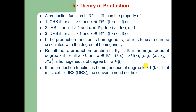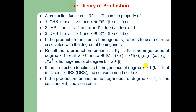If the production function is homogeneous of degree k greater than 1, there will be increasing returns to scale. And if the degree of homogeneity k is less than 1, there will be decreasing returns to scale. But the opposite may not always be true. If the production function is homogeneous of degree 1, there will be constant returns to scale and vice versa — that is, if there are constant returns to scale, the degree of homogeneity will be equal to 1.